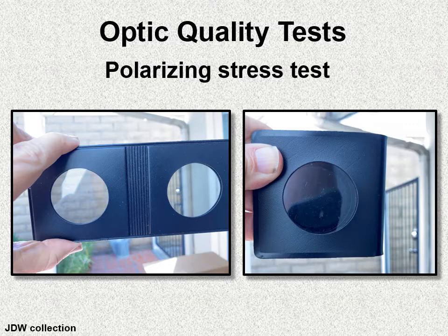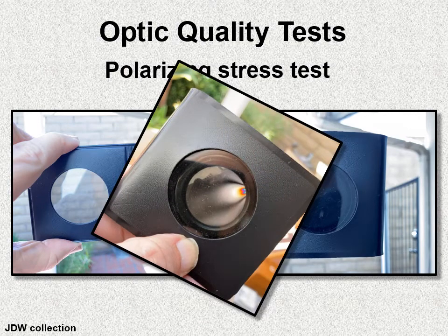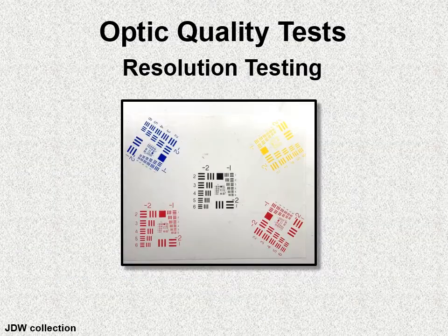Another test uses cross-polarizing filters: place a plastic lens between two cross-polarizers and you can see stress in the glass — stress in optics reduces resolution. If you put your eyeglasses between cross-polarizers you'd be shocked at the stress points. There are also eye chart resolution testing devices: go a certain distance away, see which line you can read, and test the acuity of your optical equipment.